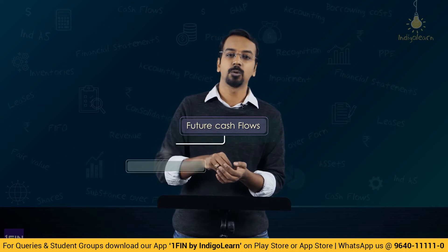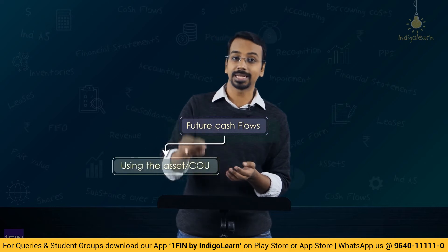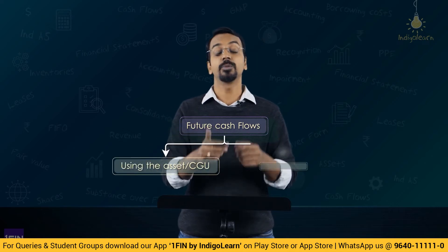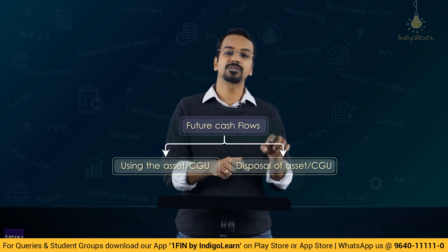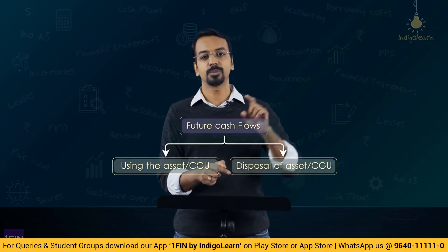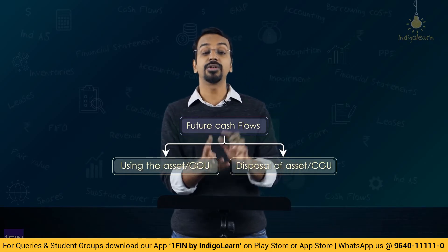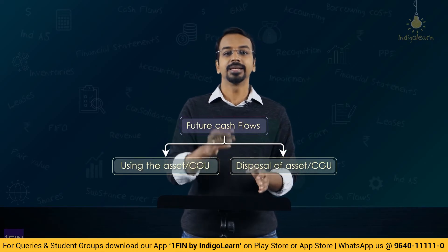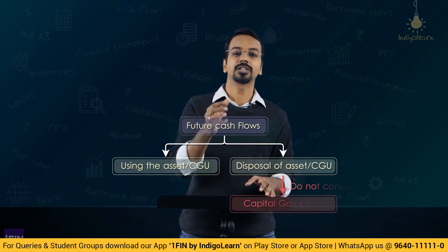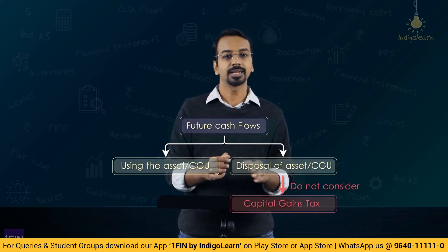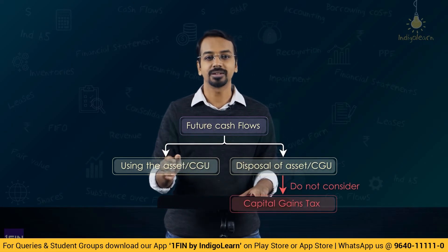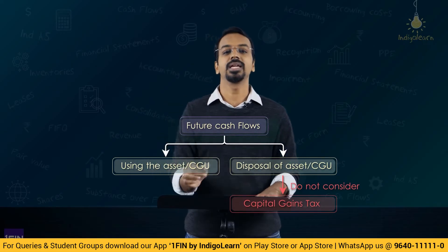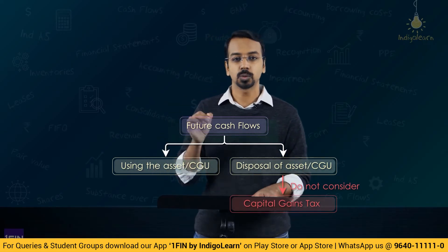When computing cash flows, there will be cash flows from using that asset and cash flows from disposal of that asset — both need to be considered. When disposing of an asset there could be an impact of capital gains tax, but that capital gains tax will not be considered, because we are considering pre-tax cash flows only.